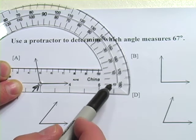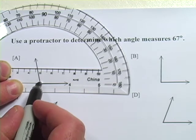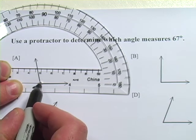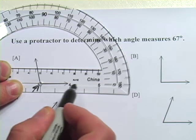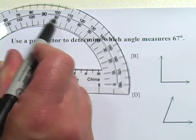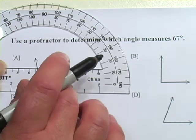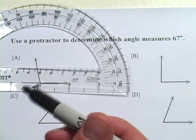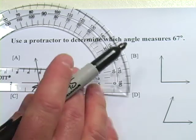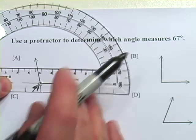The inner set of numbers is usually the one you want to look at. If you've got your vertex here and the first leg of the angle stretching out that way, then these inner numbers would be the ones you're looking at. If you were doing it the opposite way, starting from the other side, you'd use the outer set of numbers. But mostly, we'll just use the inner set.